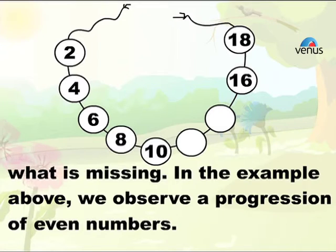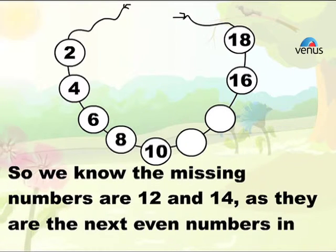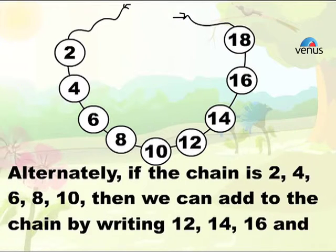In the example above, we observe a progression of even numbers, so we know the missing numbers are 12 and 14, as they are the next even numbers in the chain. Alternately, if the chain is 2, 4, 6, 8, 10, then we can add to the chain by writing 12, 14, 16, and so on.